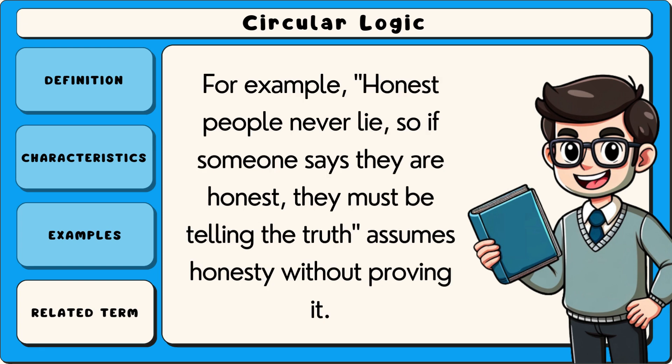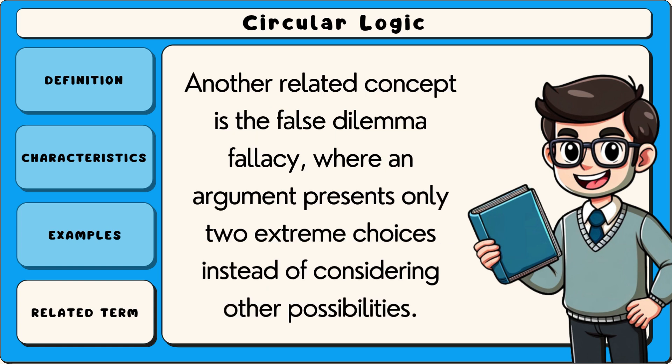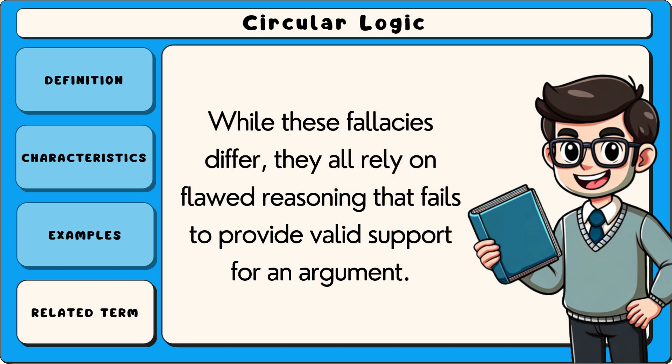For example: 'Honest people never lie, so if someone says they are honest, they must be telling the truth' — this assumes honesty without proving it. Another related concept is the false dilemma fallacy, where an argument presents only two extreme choices instead of considering other possibilities. While these fallacies differ, they all rely on flawed reasoning that fails to provide valid support for an argument.